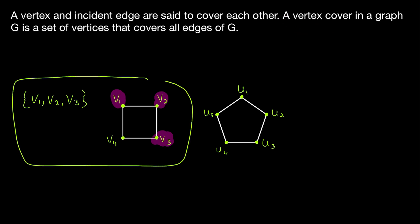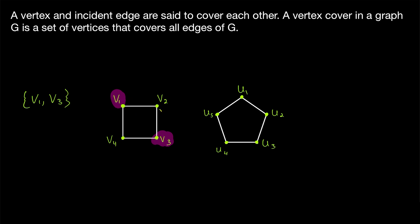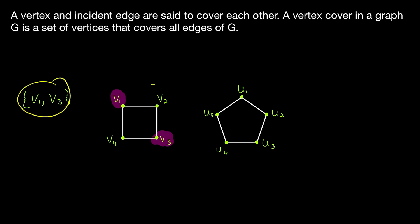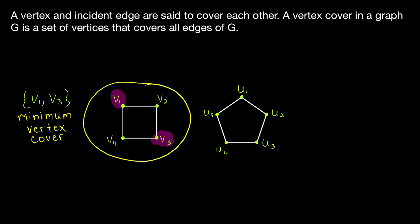One thing you might notice about this vertex cover is that we don't actually need all three of these vertices to cover all the edges. If we removed V2 from our vertex cover, we would get a smaller vertex cover. This edge and this edge are covered by V1, whereas this edge and this edge are covered by V3. So this is indeed a vertex cover of the graph — every edge is incident with at least one vertex in this set.